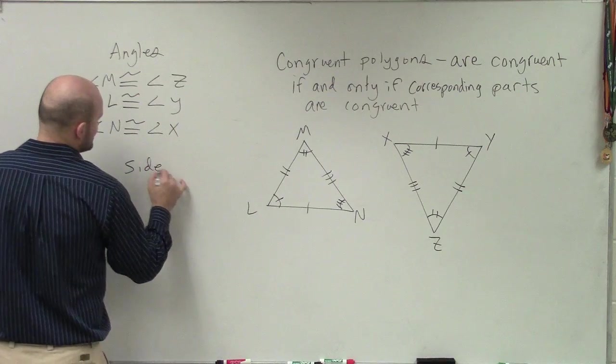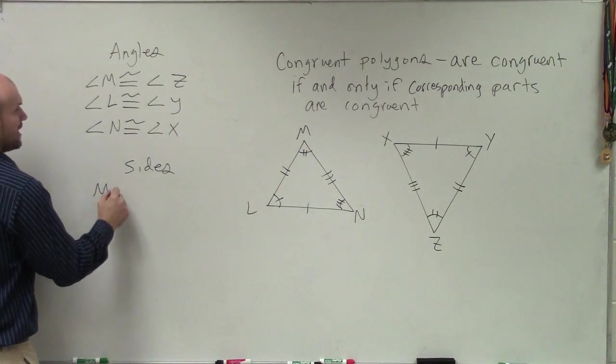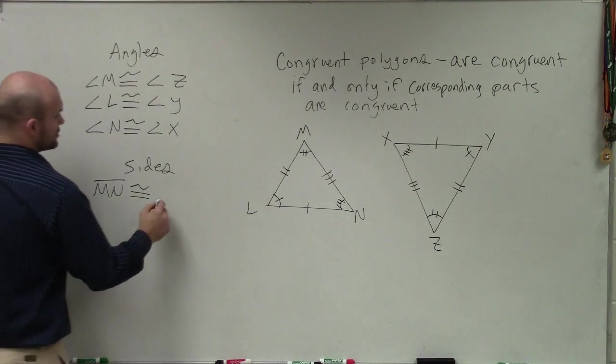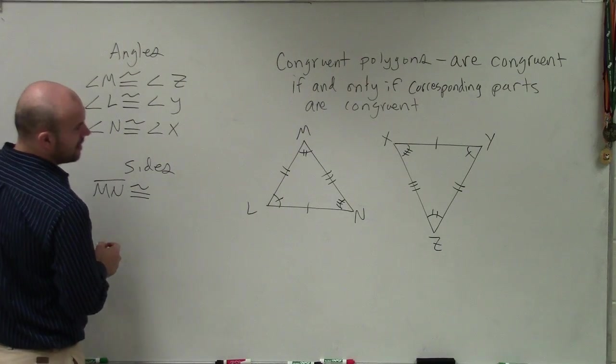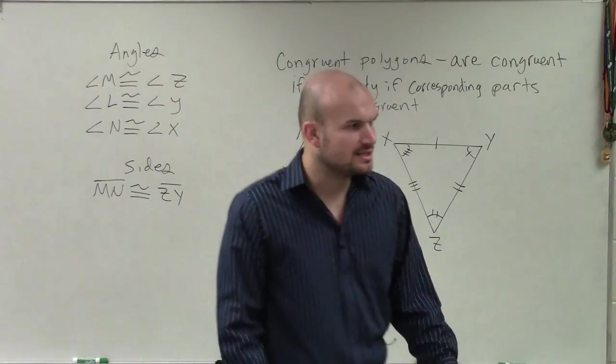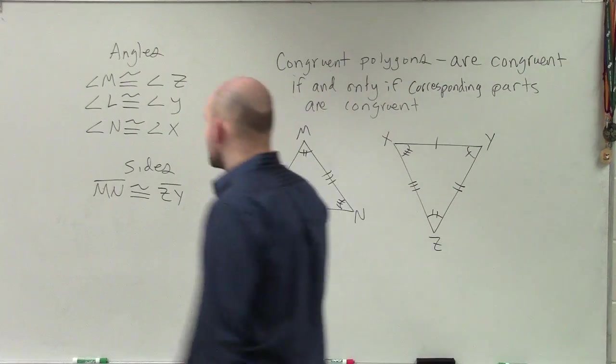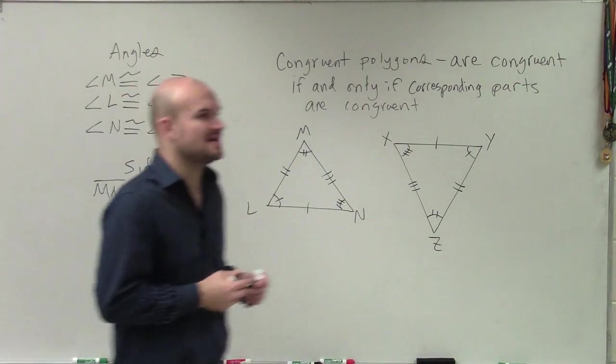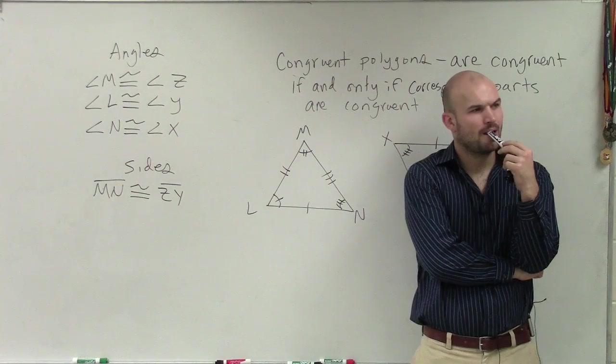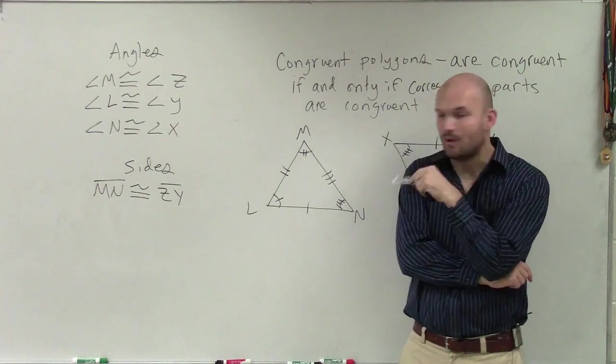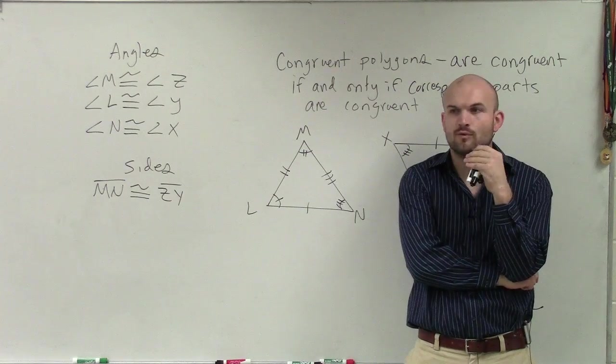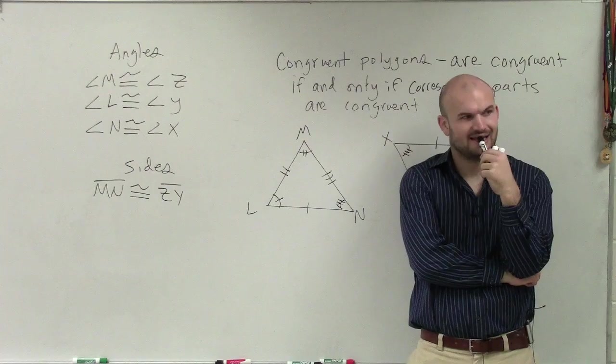But the definition doesn't say just angles have to be congruent. It says all corresponding parts, meaning all the angles and all the sides. So when I look at the sides, MN is congruent to side ZY. Let me ask Kevin: why is this congruent to ZY but not YZ? YZ or ZY is the same side, but why would I write it as ZY instead of YZ? Any idea?